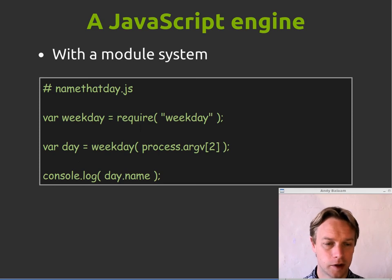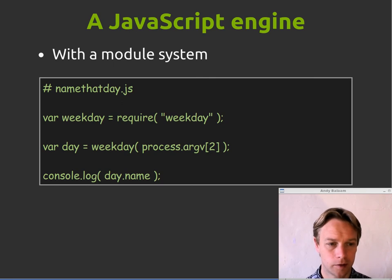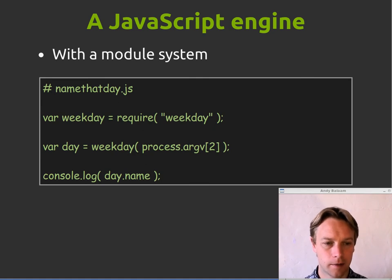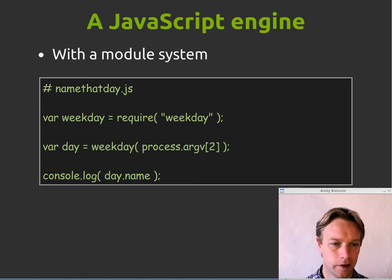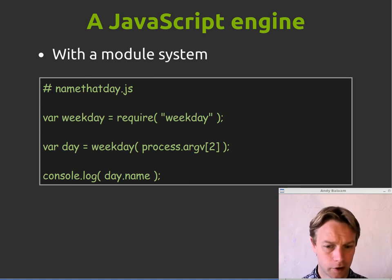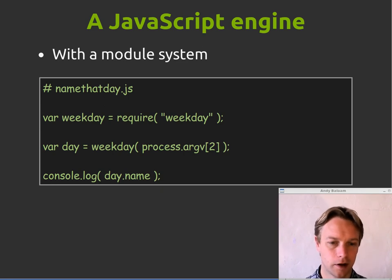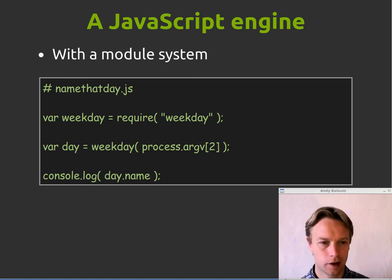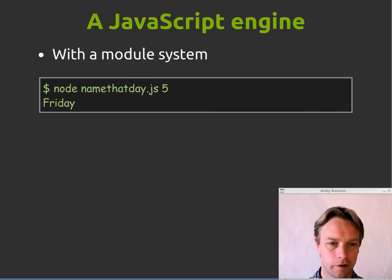Basically, you get hold of a module by saying require, and then you get something that you can put into a variable. I've called that variable weekday. A weekday is a library which will tell you the name of a day of the week. This little program gets hold of the weekday library, calls the weekday function, provides the command line argument you passed in, gets back an answer, and prints it out. When you run that program, you pass in five, and you find out that today is Friday. Hurrah!